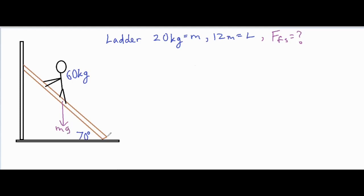Then we have the normal force from the ground supporting the ladder, and then we have a force of static friction opposing the slide of the ladder going to the left. We also have an additional force going this way which we'll call the force from the wall, which is basically a normal force as well. In addition to that, we also have a person climbing on the ladder, so that person has their own weight — mp times g, mass of the person times gravity.